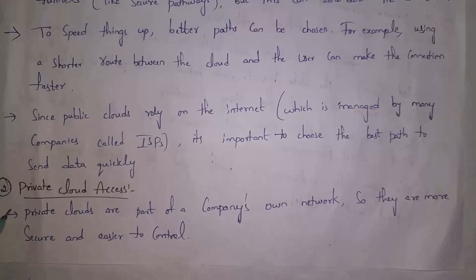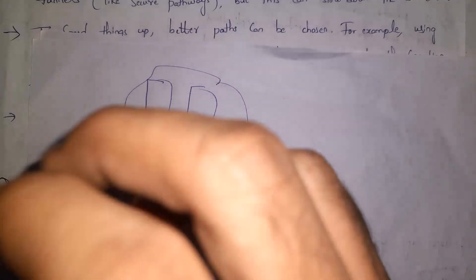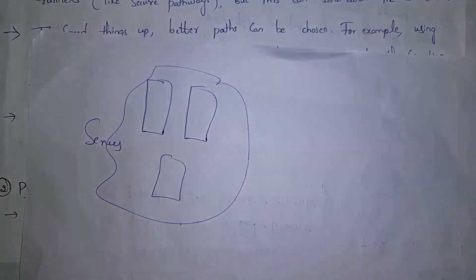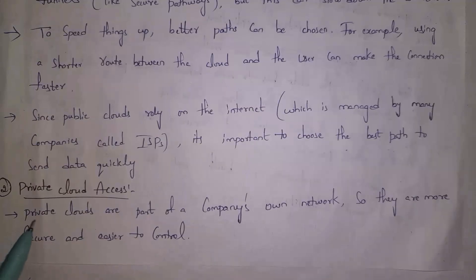The second type is private cloud access. Some companies create their own cloud setup using servers, storage, hardware, and software. We call this a private cloud because only employees in that company can use it — they use the company's software, hardware, servers, and storage. Private clouds are part of the company's own network, so they are more secure and easy to control.